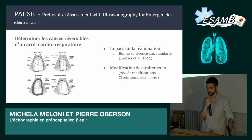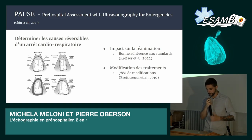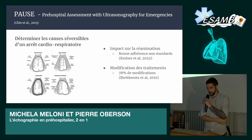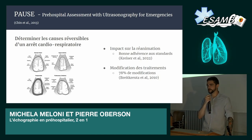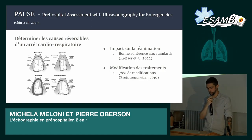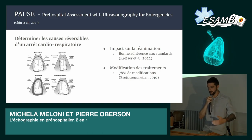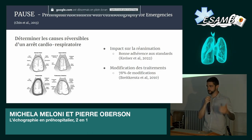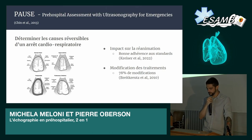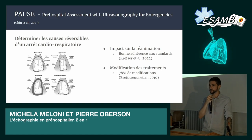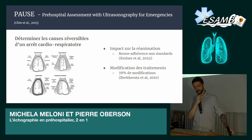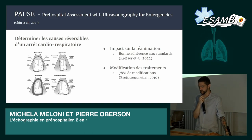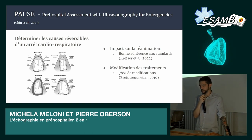Ça permet d'avoir un impact réel sur la prise en charge et de modifier le traitement donné aux patients. Cette étude est faite en Allemagne, où un SMUR est présent, ce qui change le type de modifications possibles. Mais il y a quand même 78% des cas où on va changer la prise en charge du patient par rapport à l'algorithme standard de réanimation. La majorité de ces modifications ont lieu chez des patients en AESP — activité électrique sans pouls — où l'information du monitoring ECG est souvent peu efficace.